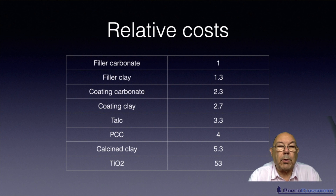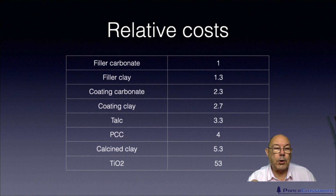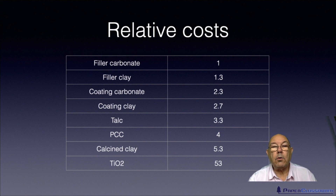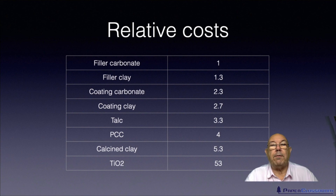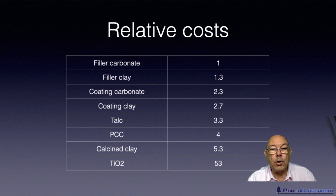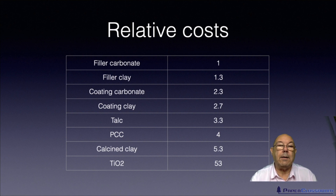We also put calcium carbonate in pigmented coatings on the surface of the sheet — you might have one, two, or three layers of coating. Coating carbonates are more pure and also finer, so they're more expensive: a coating carbonate is 2.3 times the cost of a filler carbonate. A coating clay is 2.7 times the cost of a filler carbonate, so again the clay is more expensive than the carbonate.